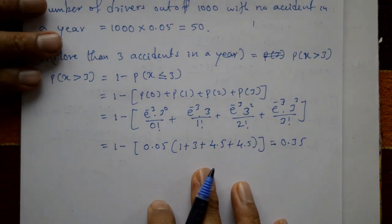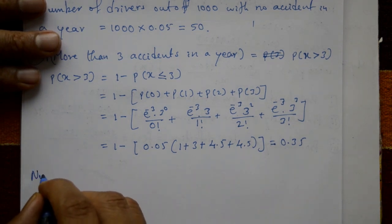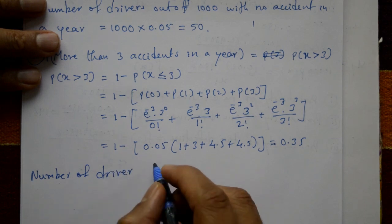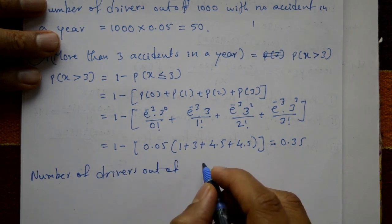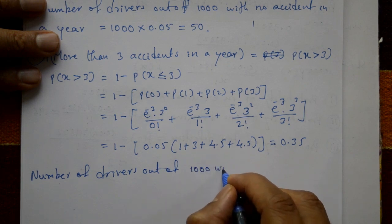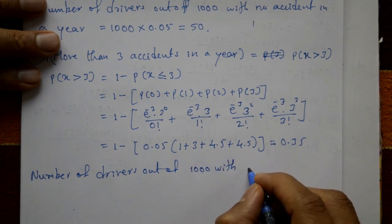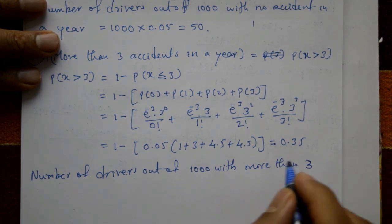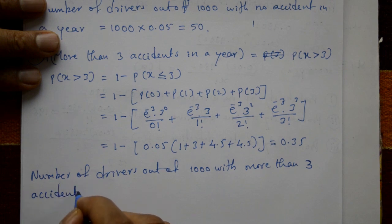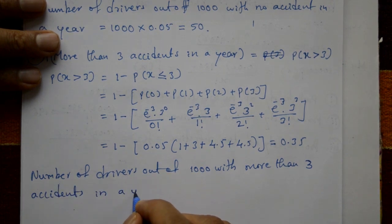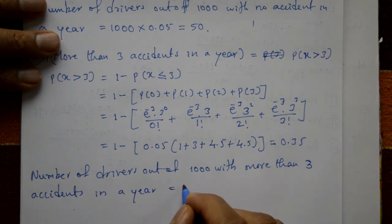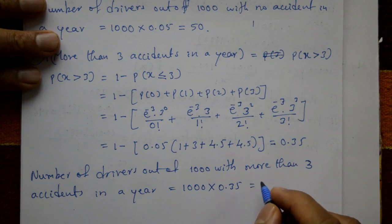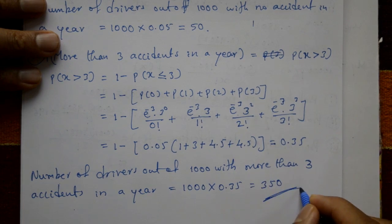The number of drivers out of one thousand with more than three accidents in a year equals one thousand multiplied by 0.35, which gives 350. This is the required solution.